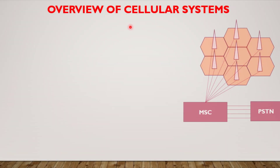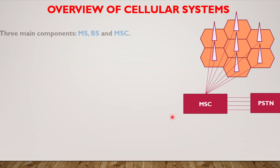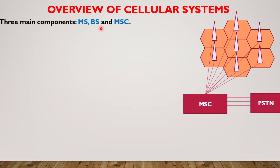Overview of cellular systems. This diagram represents a typical cellular system. Here you can see a particular geographic area is covered by hexagonal shapes, and all these hexagonal shapes have their respective base station. All these base stations are connected to an MSC, which is further connected to a PSTN network. The main components of this typical cellular structure are mobile station, base station, and MSC.